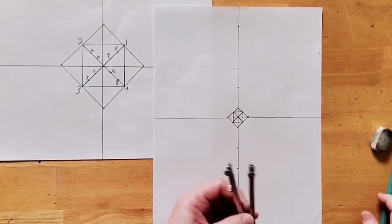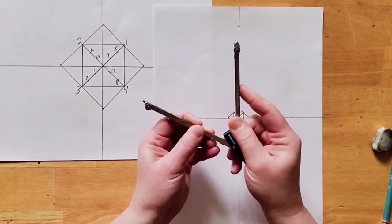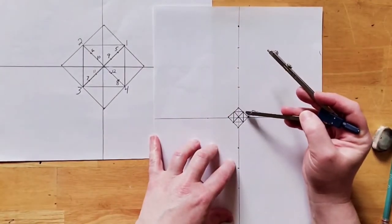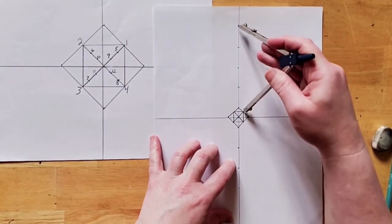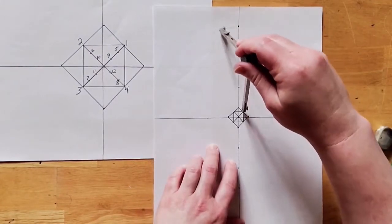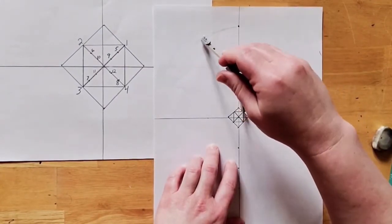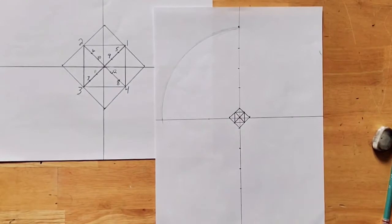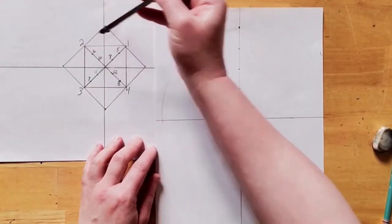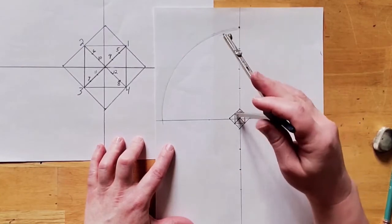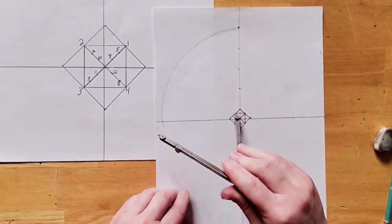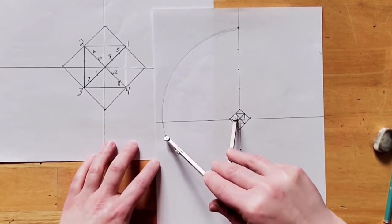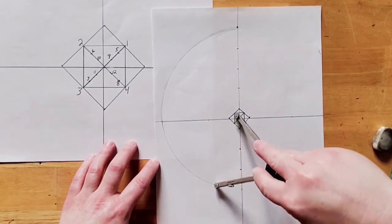Next, we're going to take our mathematical compass and put the pointy end at number one-two marking, and the drawing end with the highest mark on our line. Without changing the angle of the compass, we're going to draw a line from the top mark on our vertical line down to the horizontal line. Next, we're going to take the pointy end of our compass and put it at the number two marking. We're going to adjust our compass so that the drawing end lines up with where we left off, and then we'll continue down to our center line.